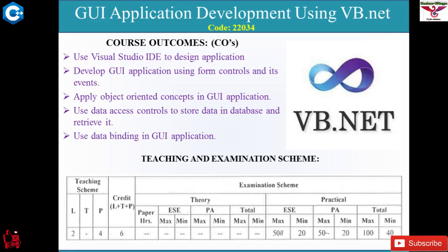The third course outcome is to apply object-oriented concepts in GUI applications. You are all aware of object-oriented programming language features — that is inheritance, polymorphism, data abstraction, and encapsulation. How we can apply these concepts in your VB.NET application is studied in the third unit.